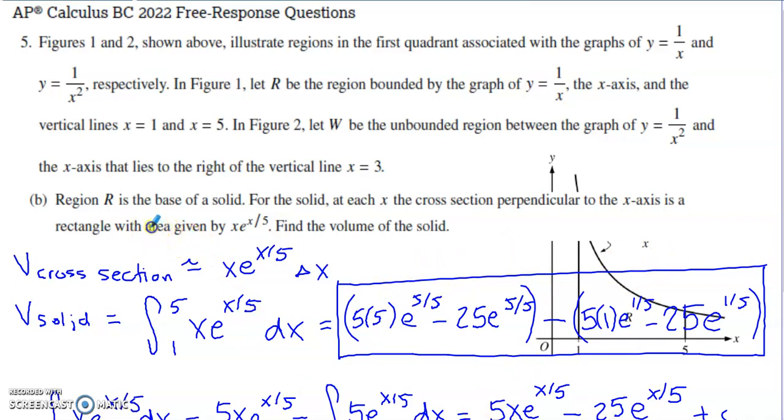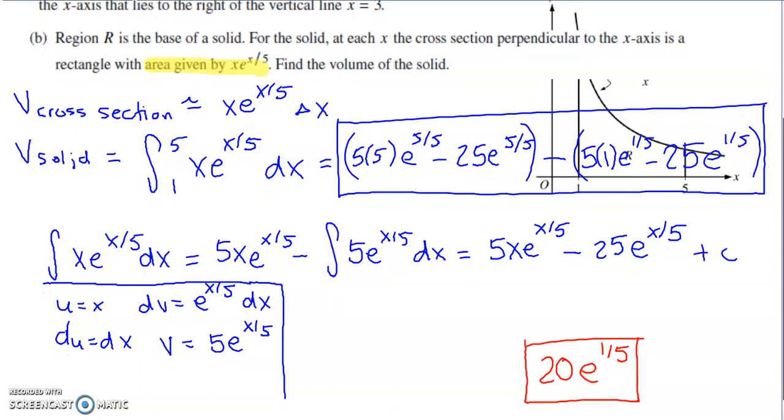They've done all of the geometry that we would normally have to do. The area of the face of these rectangular cross-sections is given by XE to the X over 5. I would multiply the area of the face by delta X to turn that area calculation into a volume calculation for the cross-section. If I want to add together all possible cross-sections volumes that span the region from X equals 1 to X equals 5, I'm going to have to integrate this expression just like we did back in part A. This is my answer. I have a lot of work that I did to build that answer down here.